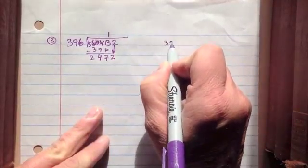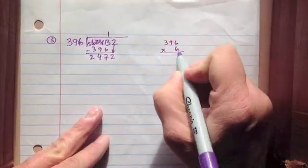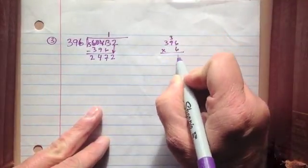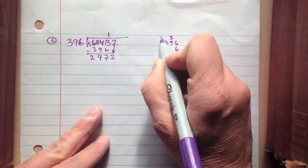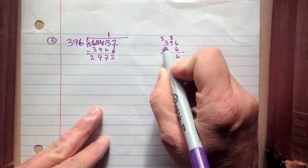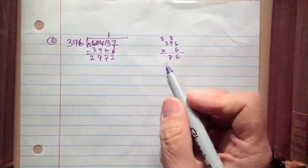So on this side, I'm going to go ahead and multiply real quickly what 396 times 6 equals. 6 times 6 is 36, 6 times 9 is 54, plus 3 is 57, 6 times 3 is 18, plus 5 is 23.